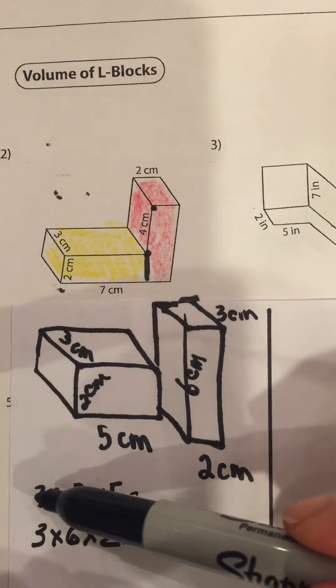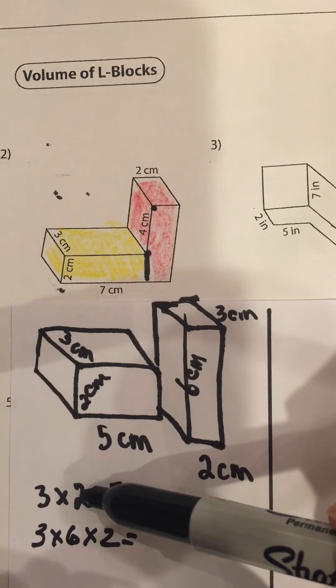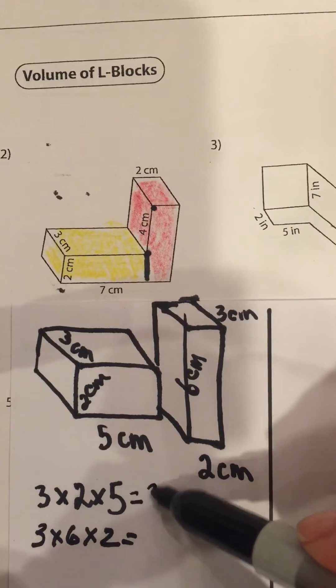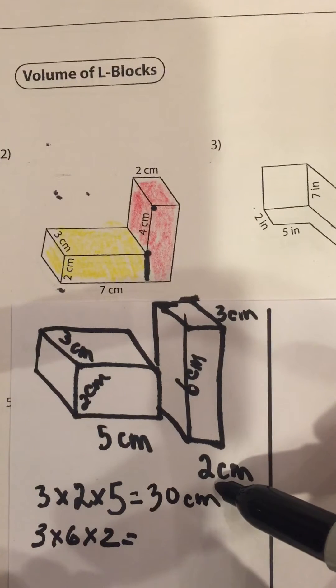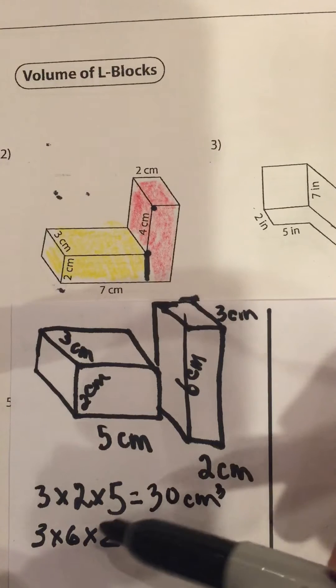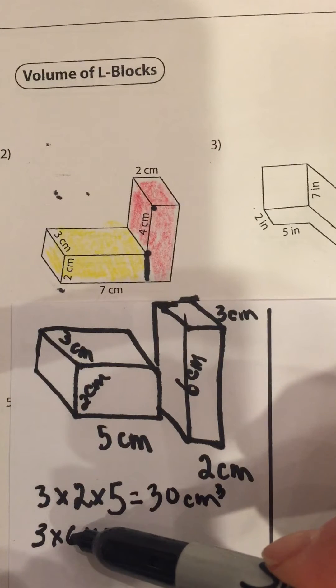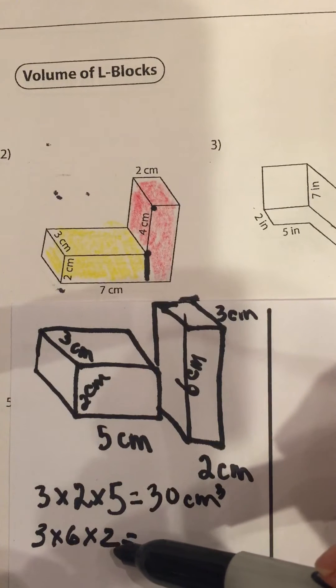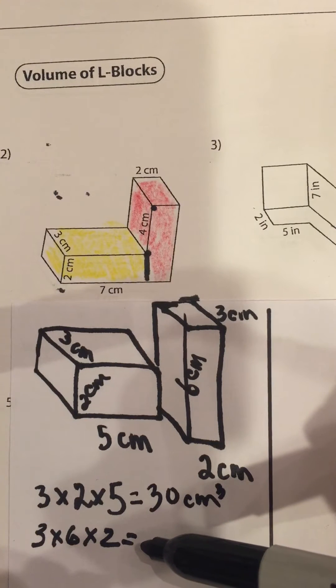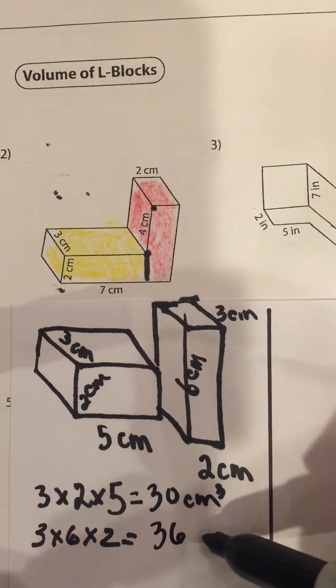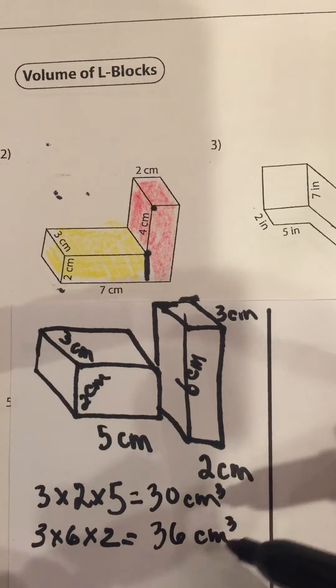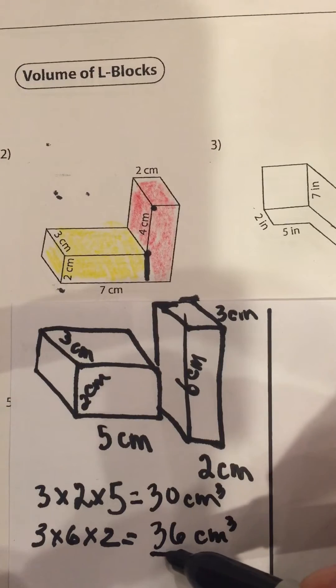Okay, three times two is six, times five is 30 cubic centimeters. And three times six is 18, times two is 36 cubic centimeters.